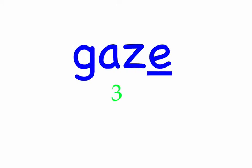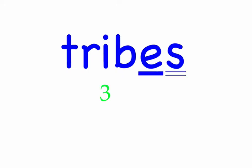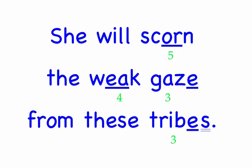From these tribes. Tribes — five sounds: T, R, I, B, Z. Tribes. Mark the word. She will scorn the weak gaze from these tribes.